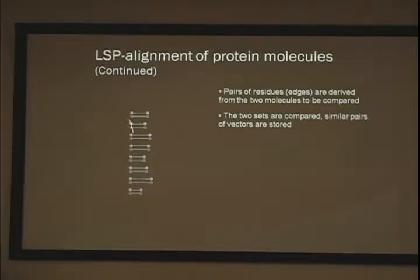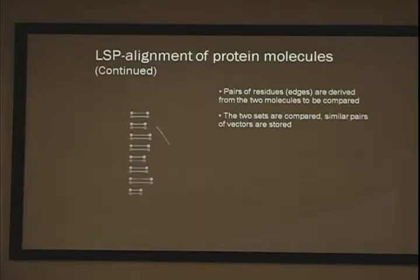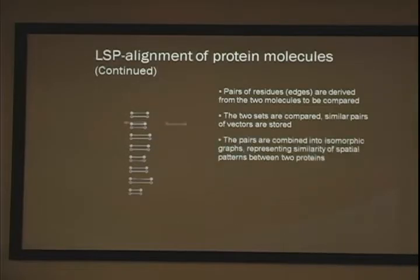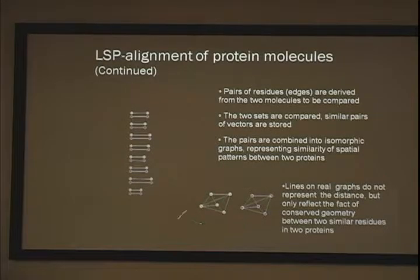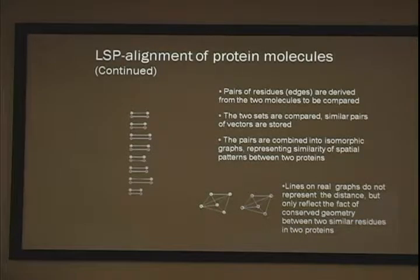If these pairs are made by similar residues — and we have a criterion to decide if they're similar or not — and they have the same kind of distances and angles, then we consider them similar pairs. We derive all the similar pairs from this set. Then, using classical and effective graph theory methods, we find if these pairs have connectivity in both proteins.